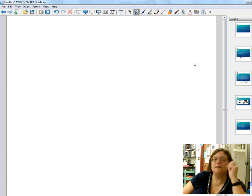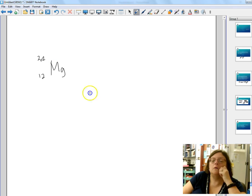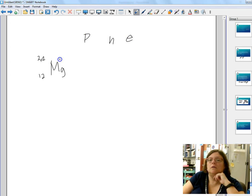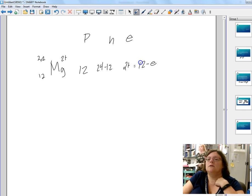What if I tell you I have magnesium-24 with a 2+ charge? He has 12 protons. How many neutrons? 24 minus 12 equals 12. Electrons are going to be charge equals protons minus electrons.